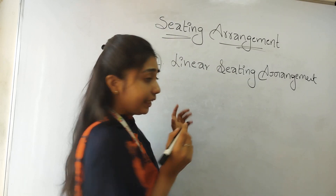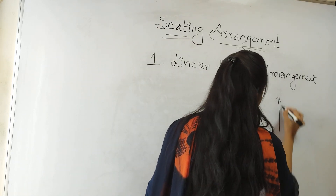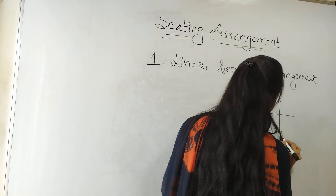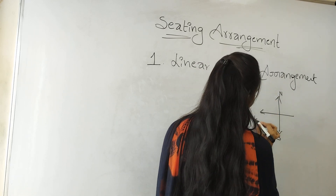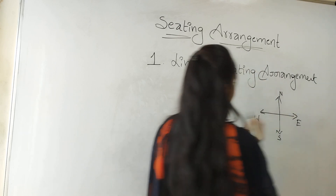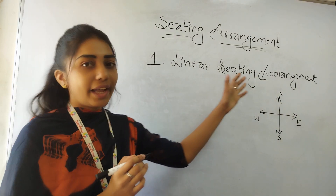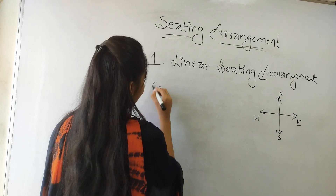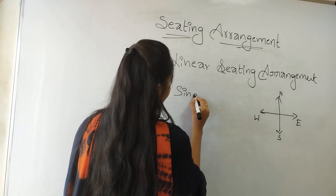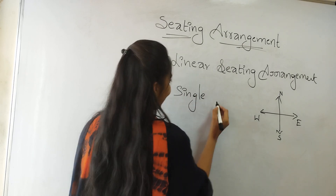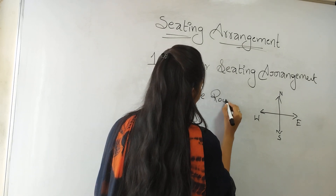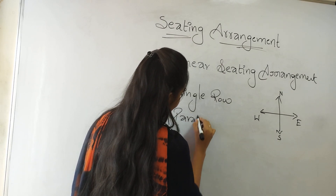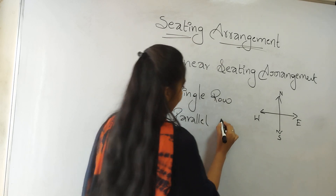Before I explain these, I will cover the directions: North, South, West, and East. In linear seating arrangements, we have two types. The first one is single row, and the second one is parallel seating arrangement.